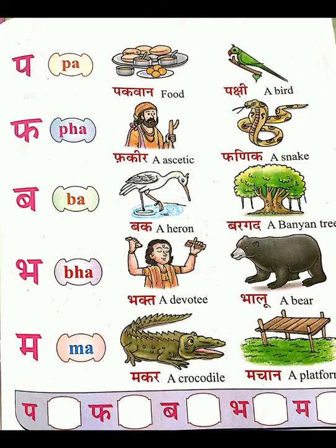In the next page they are given the letters PA, PHA, BA, BHA, MA. After each letter they are given a box — write the letter neatly. PA in the first box, PHA in the second box, then BA, BHA, MA. Write these five letters in your textbook.